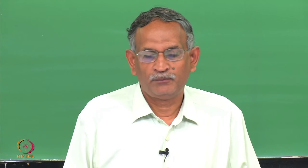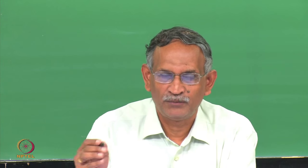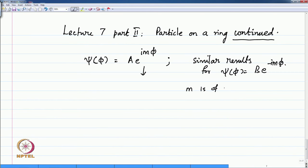Welcome back to the lecture. We will continue with the second part to conclude the particle in a ring introduction. We shall look at what we left, namely the wave function being given by an exponential e^(imφ), and m takes positive values 0, 1, 2, 3, etcetera.